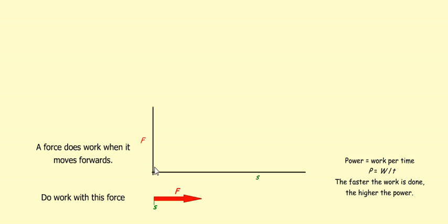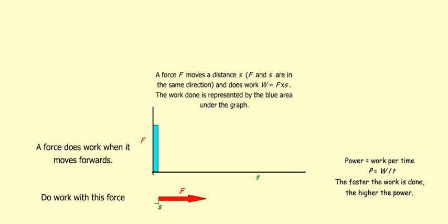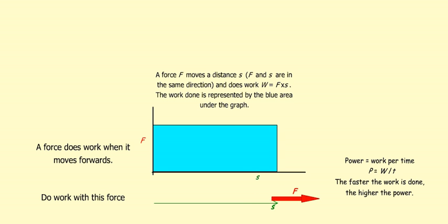If we do an amount of work as we did before through a distance s, then we can graph this and we can do it at a specific rate. Here we can see that with time an increasing amount of work is being done. At the end, we did a specific amount of work and it took a specific amount of time. So the particular area under the graph equals the work done. And if we divide that by the time it took to do that work, we get the power.